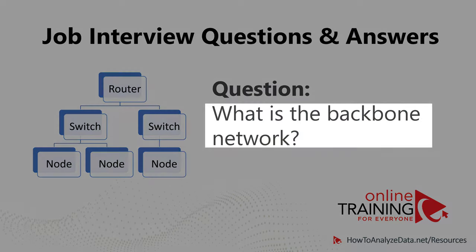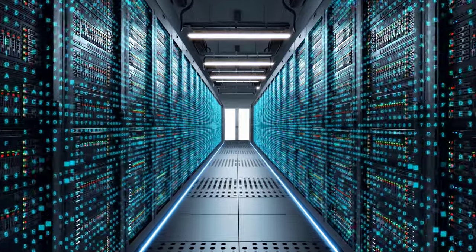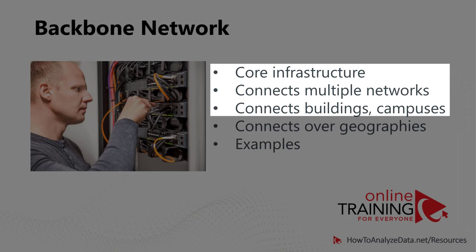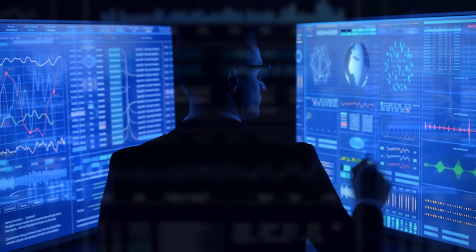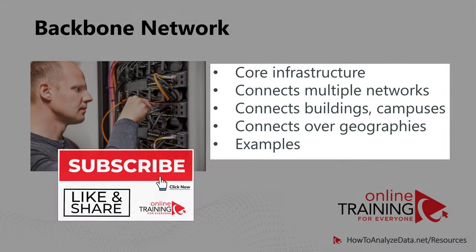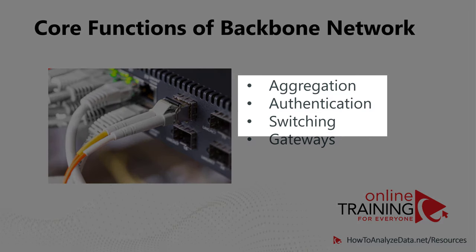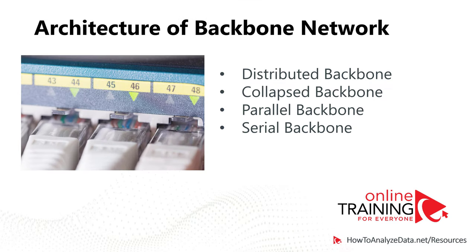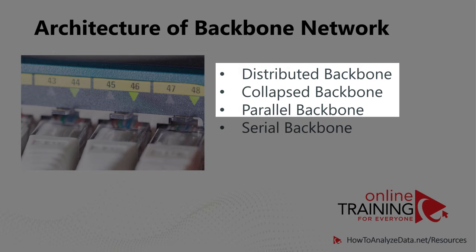A lot of times you might be asked, what is a backbone network? Backbone network, which is also called core network, typically provides a path for the exchange of information between different LANs or sub-networks. It can connect networks in the same building, networks in different buildings, or over wide geographical areas. Backbone networks have much larger throughput capacity than the networks they connect. Examples include a large company with many locations needing a backbone to connect them all, or the internet backbone. A backbone network typically performs at least four core functions: aggregation, authentication, switching, and being a gateway as an entry point into the network. The most important architectural designs are distributed backbone, collapsed backbone, parallel backbone, and serial backbone.